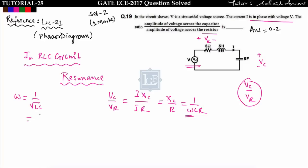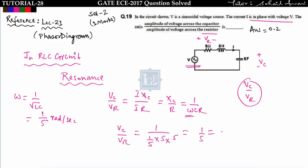At resonance, omega equals 1 upon under root(LC), where L equals 500 and C equals 500, giving omega equals 1/5 radian per second. So VC upon VR equals 1 divided by (1/5 * 5 * 5), giving 1/5, which equals 0.2. This was asked in Set 2 for 1 mark, and the concept has been discussed in lecture number 21.